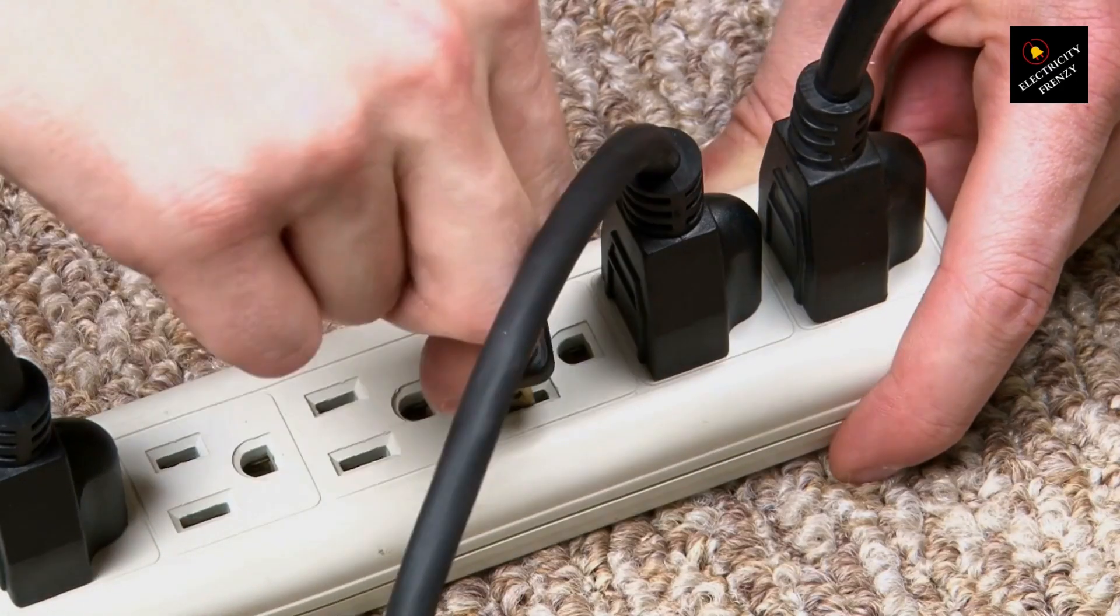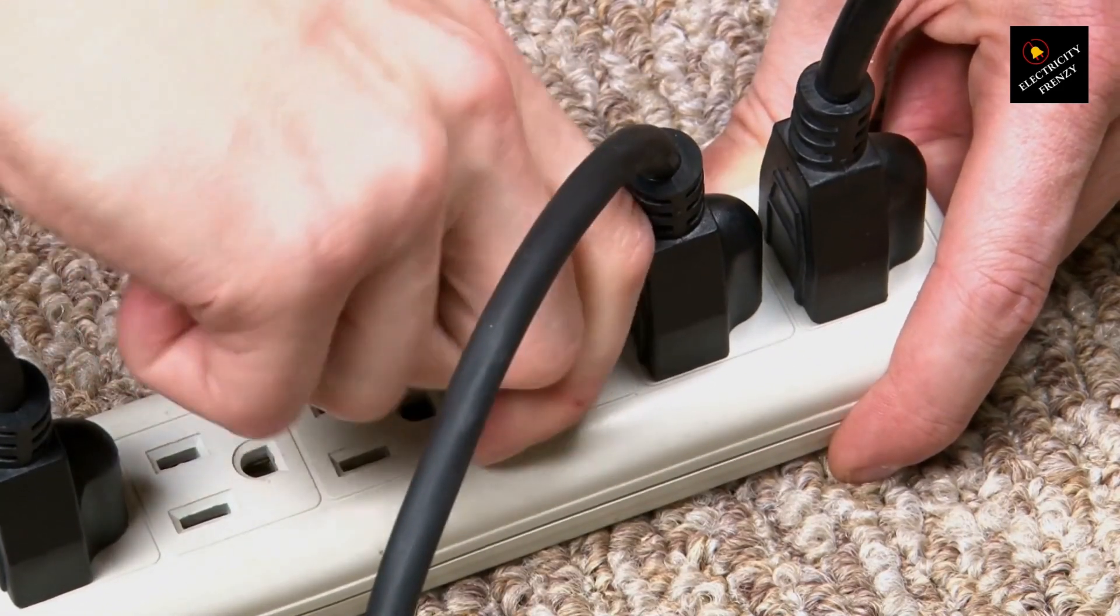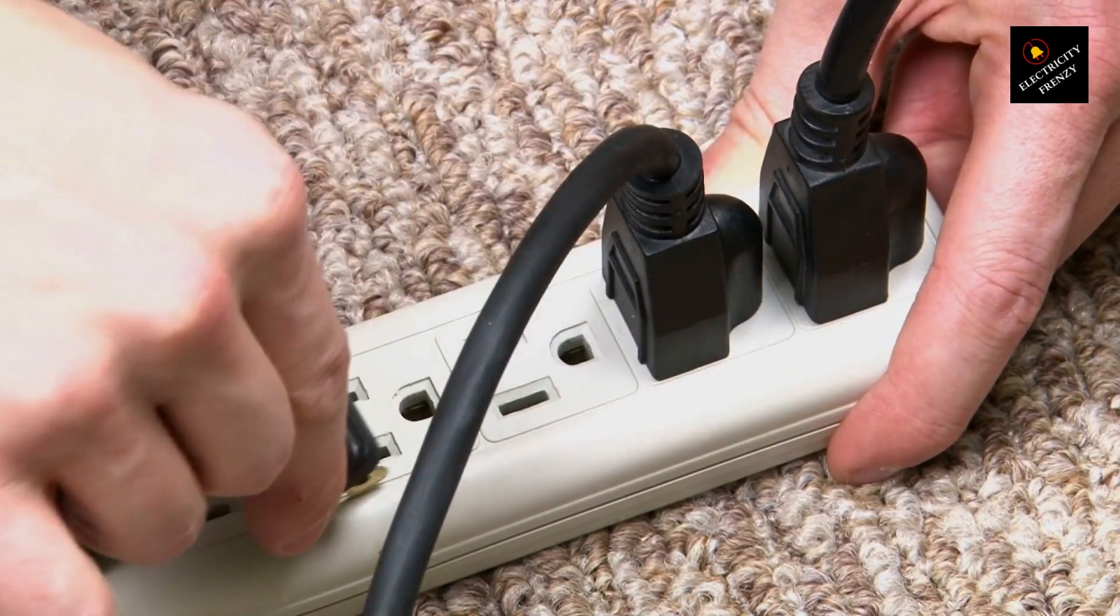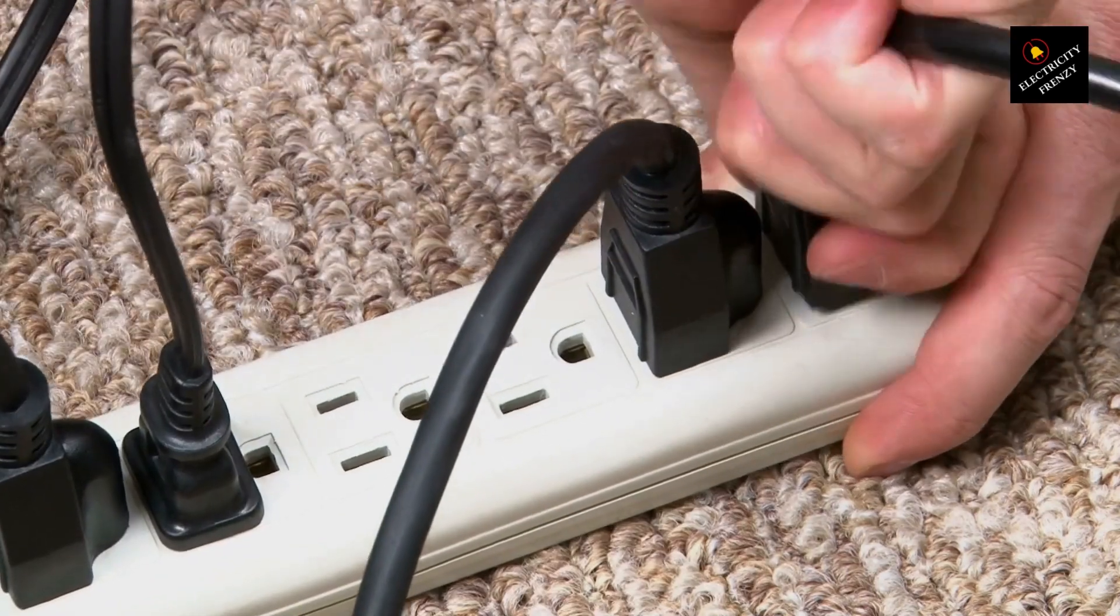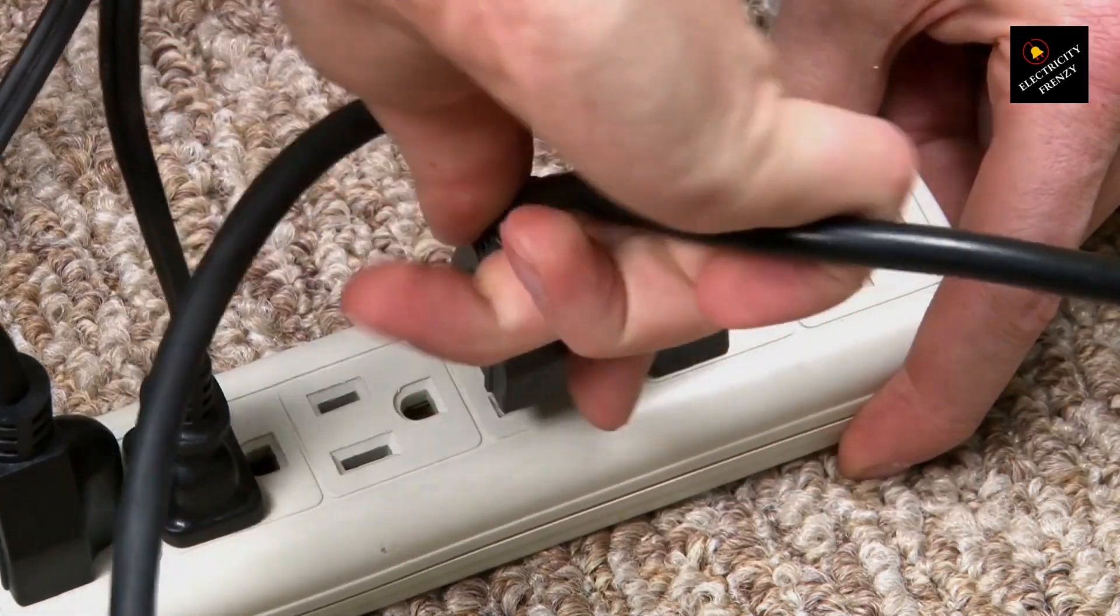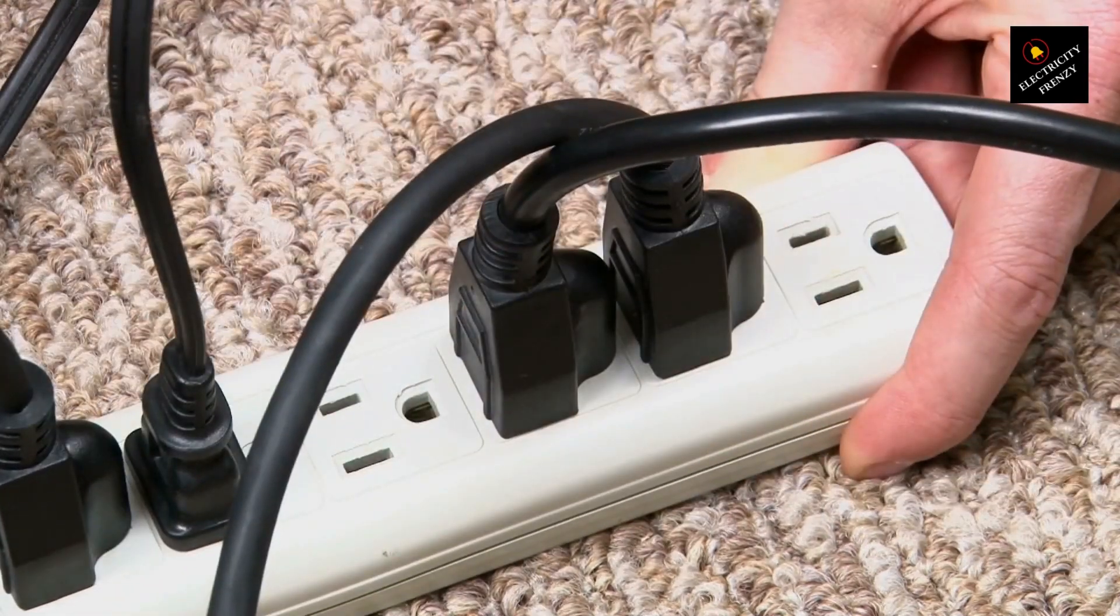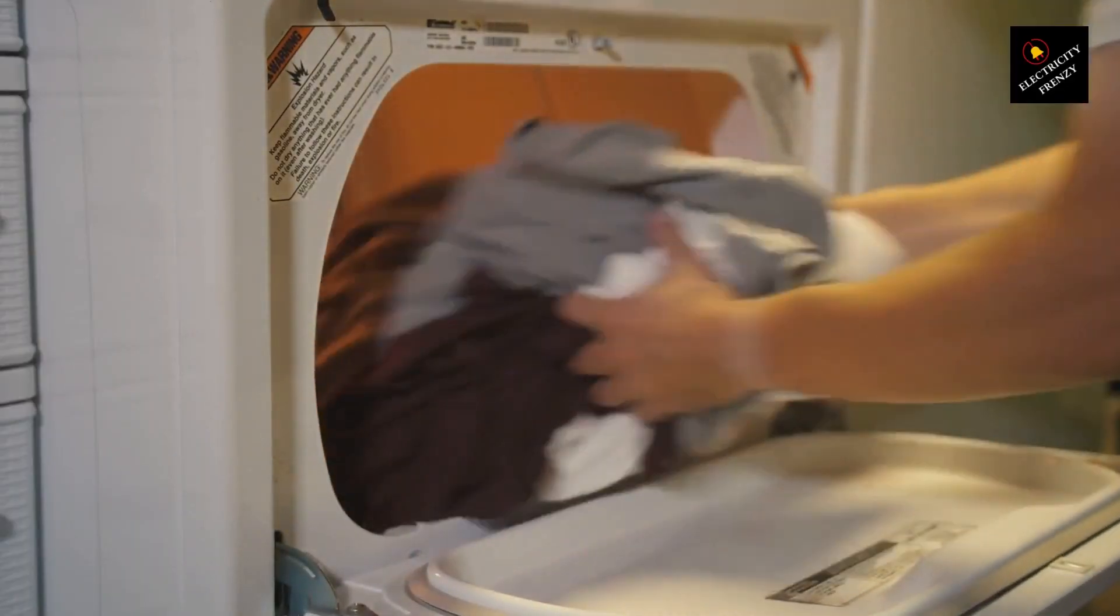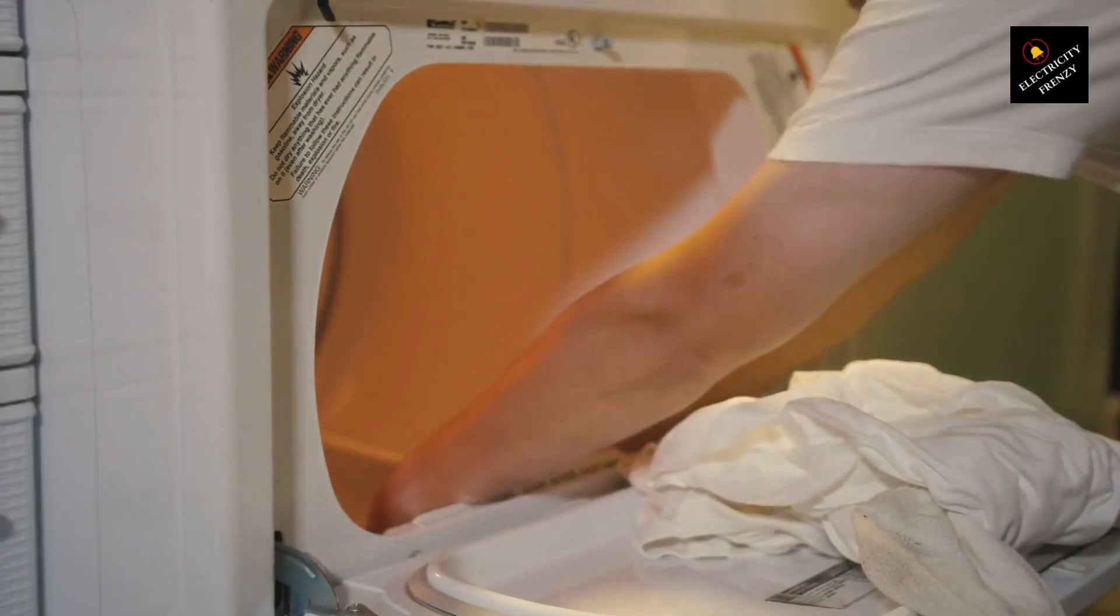Overloaded circuit. If the circuit that your dryer is connected to is shared with other high-power appliances, such as air conditioners, refrigerators, or other large appliances, running them simultaneously can exceed the circuit's capacity. This can lead to an overload, causing the circuit breaker to trip.